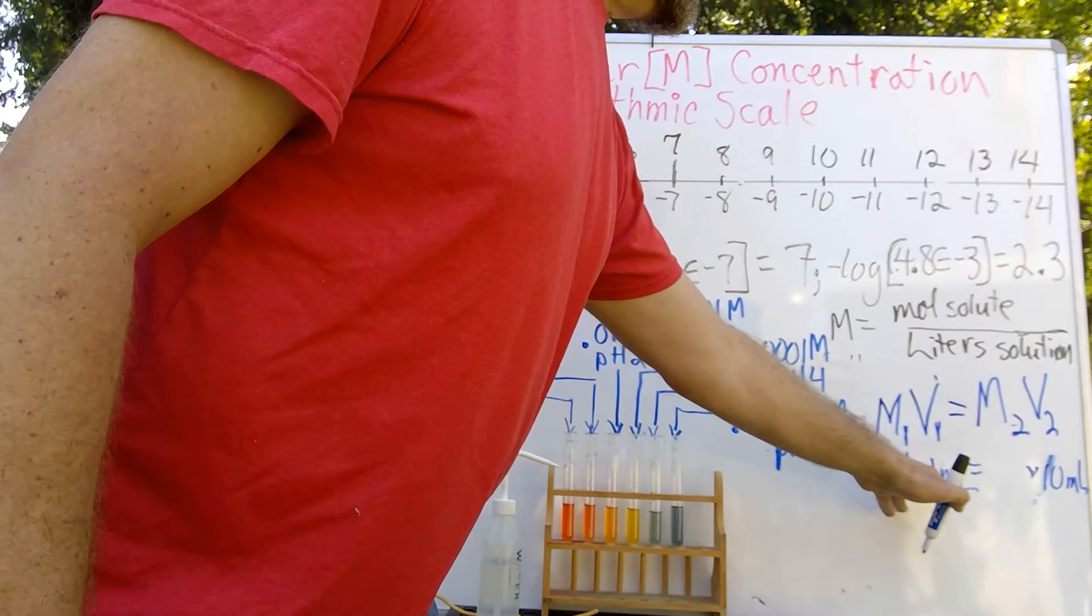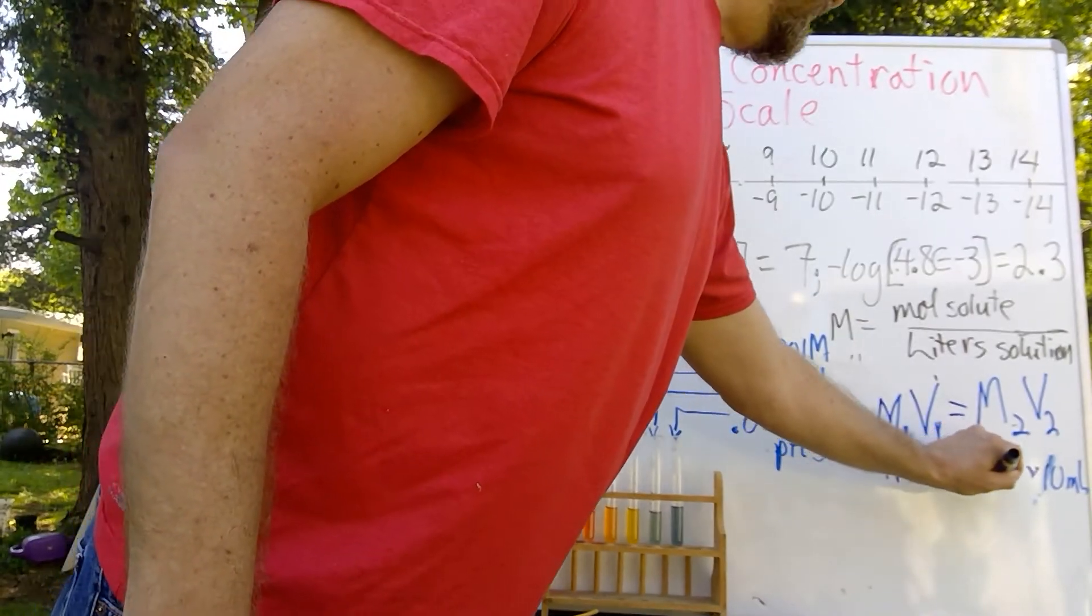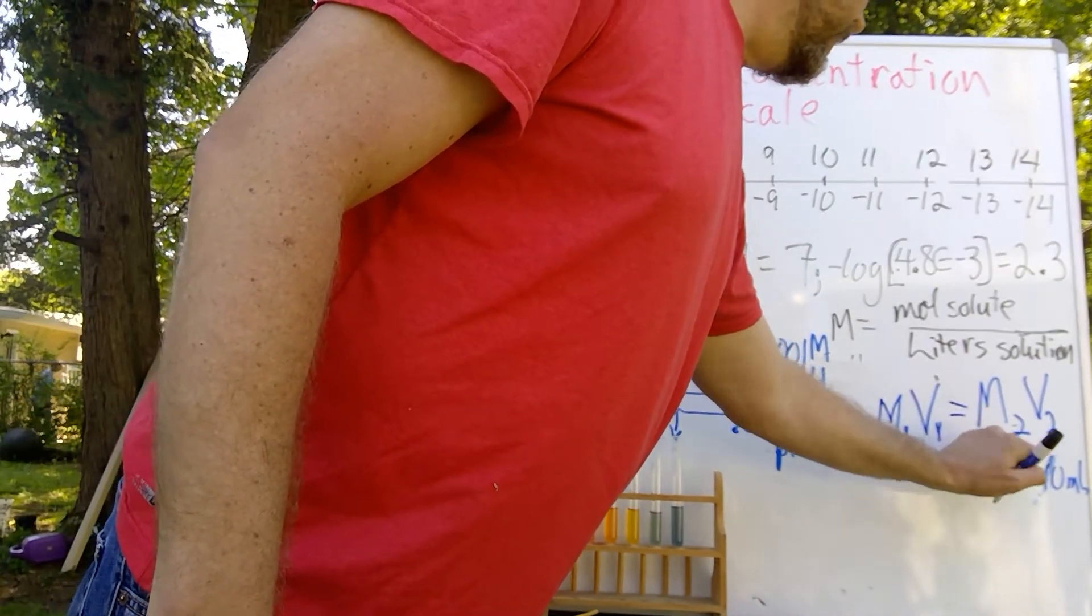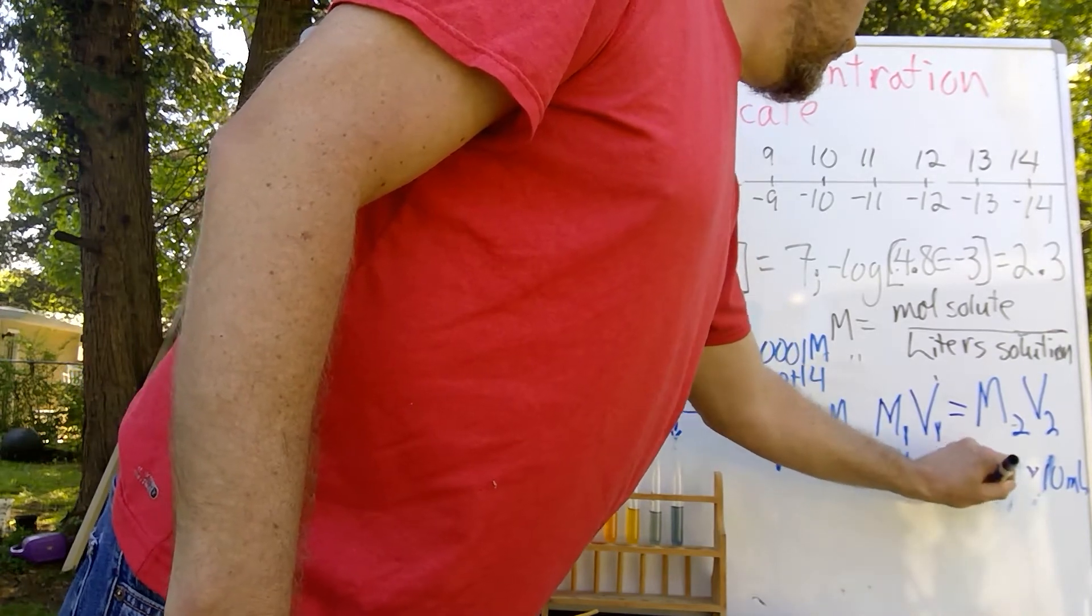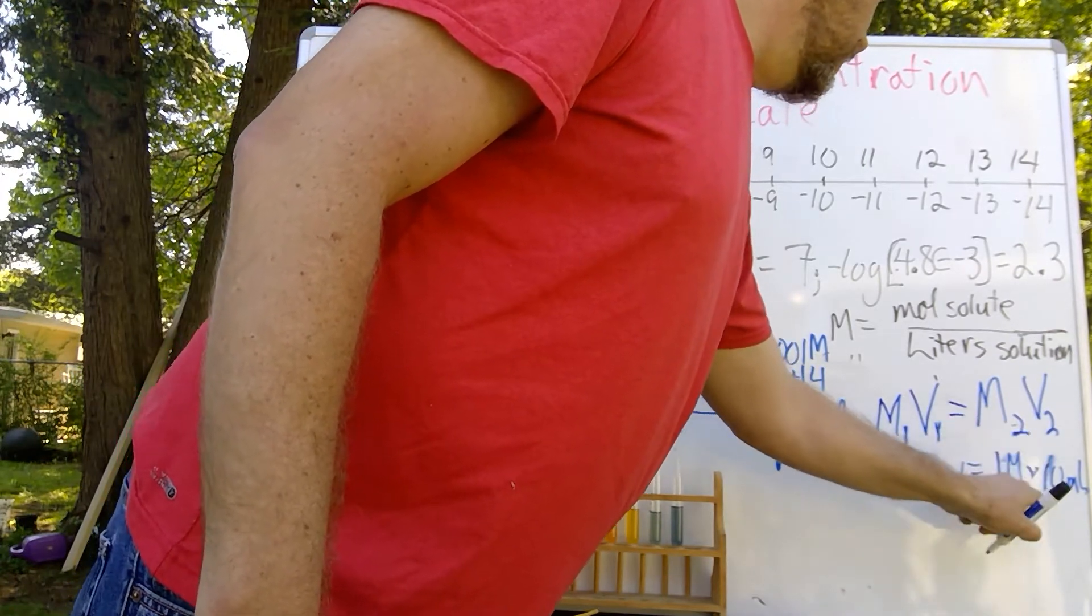as you can tell here, we can just simply take this side and divide it by that side and you would see that we were now at a weakened concentration of 0.1 molar.